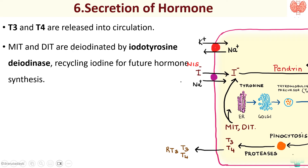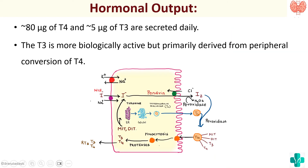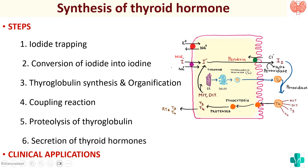Regarding hormonal output, approximately 80 micrograms of T4 and 5 micrograms of T3 are secreted daily. T3 is more biologically active, so T4 is converted to T3 in the periphery. We have more T4 but T3 is more active. When writing a short essay on this topic, remember to include the steps as well as relevant clinical applications — don't forget Pendred syndrome and the anti-thyroid drugs which inhibit proteolysis.